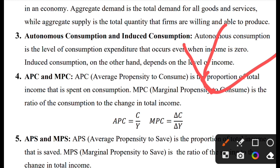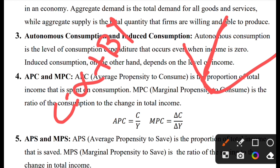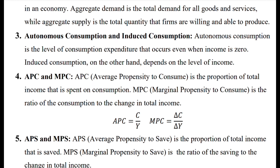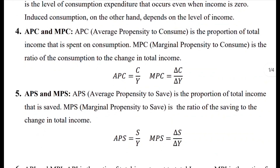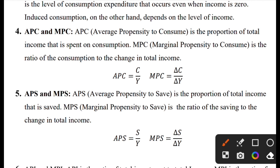When the level of income is zero, consumption is autonomous consumption. The sum of autonomous and induced consumption gives total consumption. We express this as C is equal to alpha plus beta Y, where alpha is autonomous consumption. APC — average propensity to consume — is the proportion of total income that is spent on consumption, that is C divided by Y.